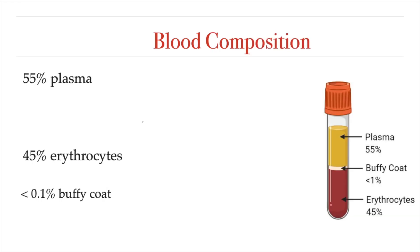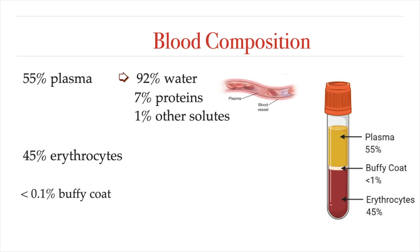55% of our blood is made up of a liquid substance called plasma. Blood plasma is a light, amber-colored liquid component of blood without any blood cells. It is mostly water, but also carries proteins, ions, and other small solutes.